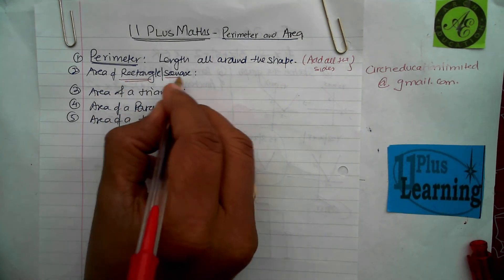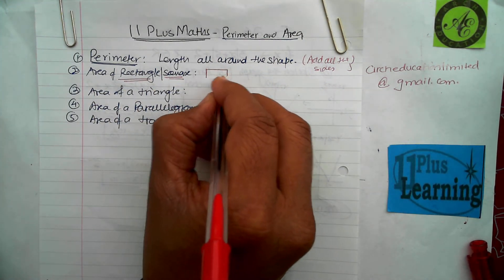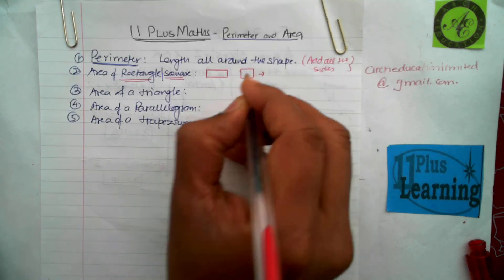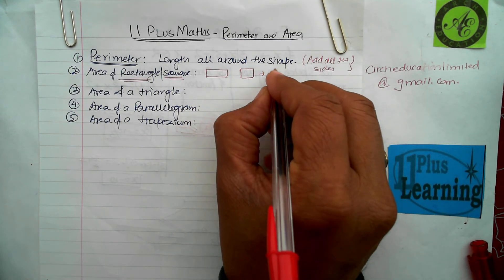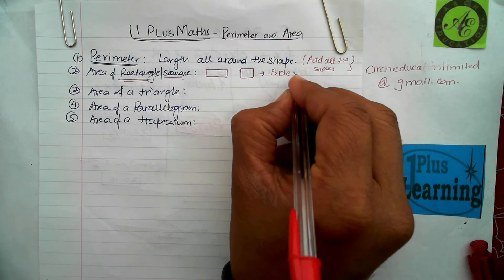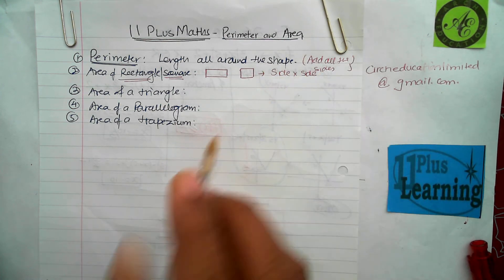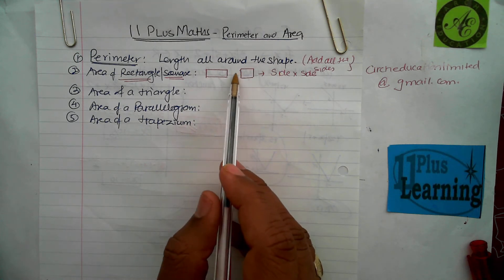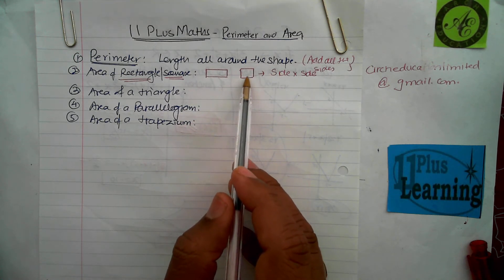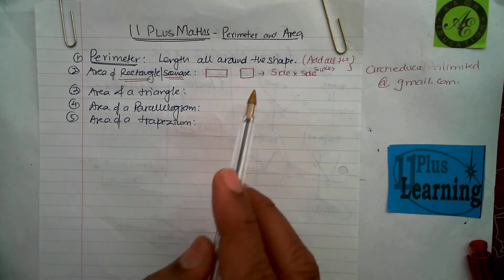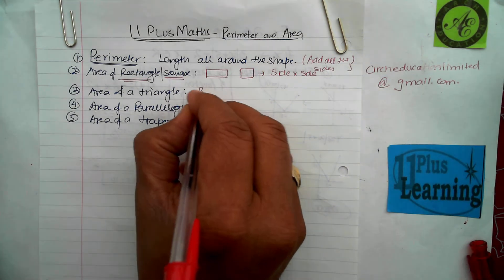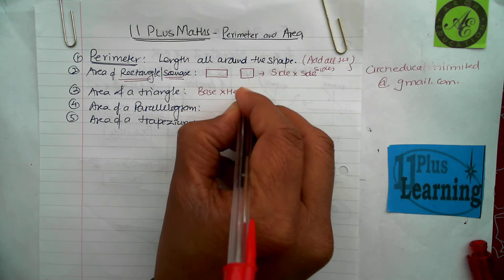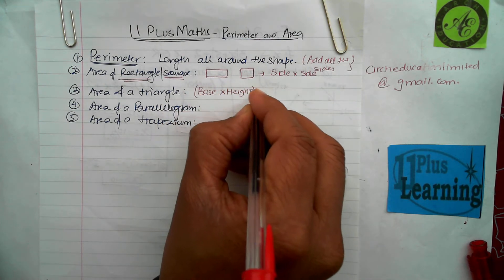For the area of a rectangle or a square, we multiply one side by the other side. In a rectangle the two sides are length and width, and in a square all sides are the same so we just multiply two equal sides. For the area of a triangle, the basic formula is base times height divided by two.